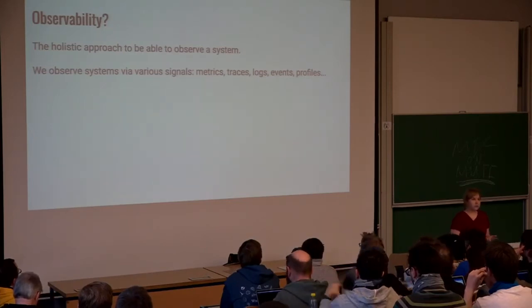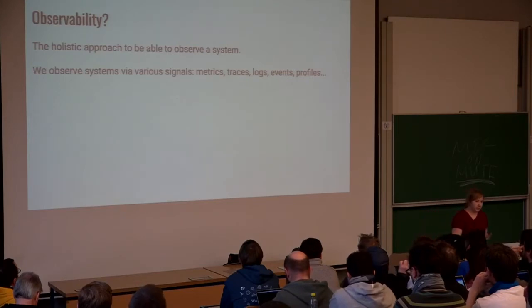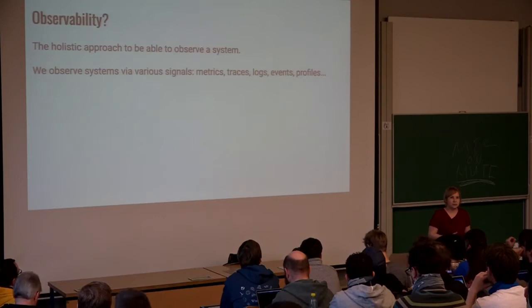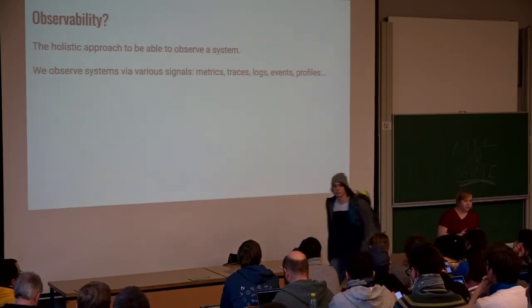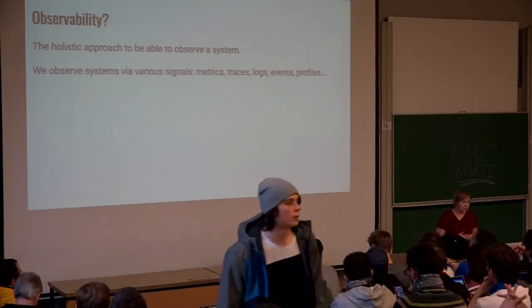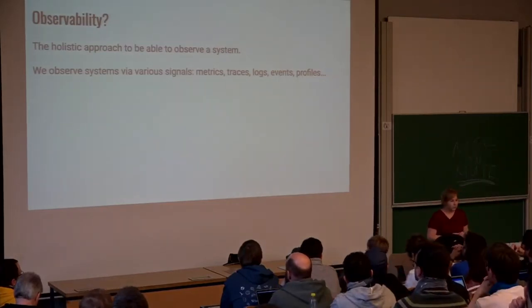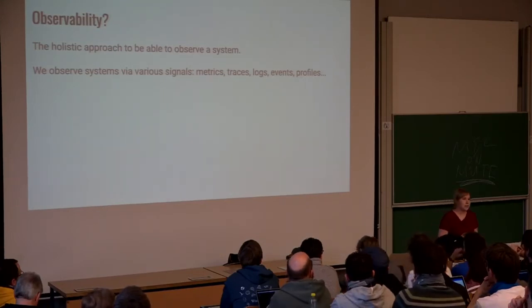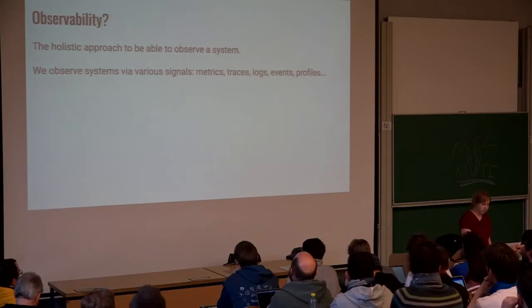What we call observability is a holistic approach to be able to observe a system for properties such as reliability, performance, deployability, and so on. We look at multiple different signals in order to achieve that. And metric collection, distributed traces, profiles, logs are a few of those. This talk is mainly about the motivation and the core concepts that we came up with in the recent years to make Go production systems more observable.